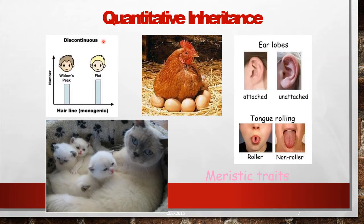Some examples of discontinuous traits include hairline and earlobe, which can be either attached or unattached. Tongue rolling is another example — some people can roll their tongue and some cannot. These are all examples of discontinuous traits, also called meristic traits.